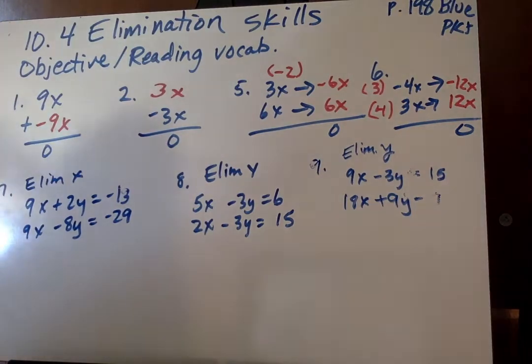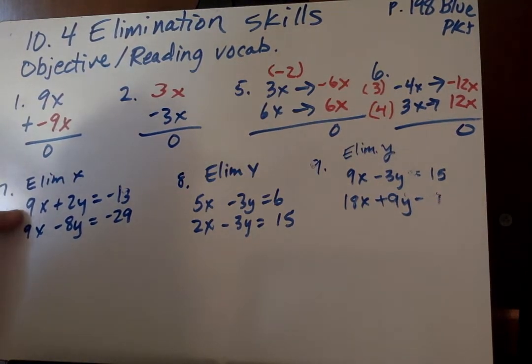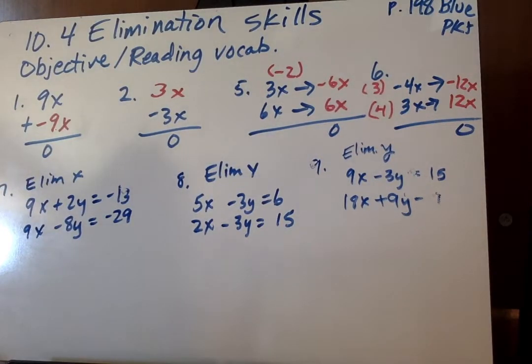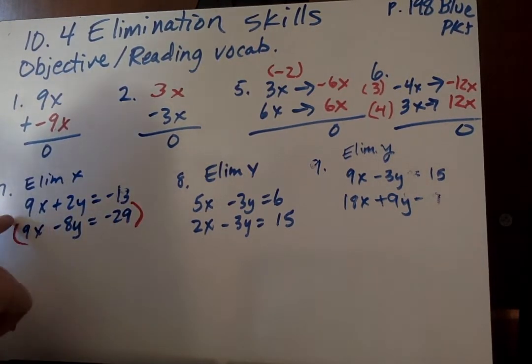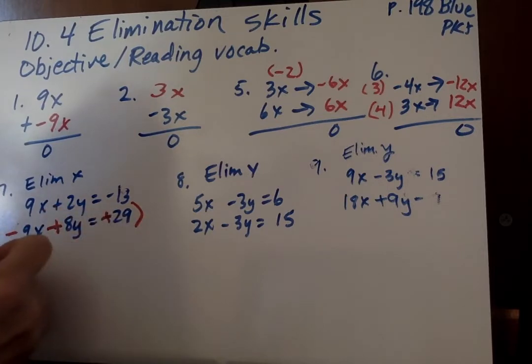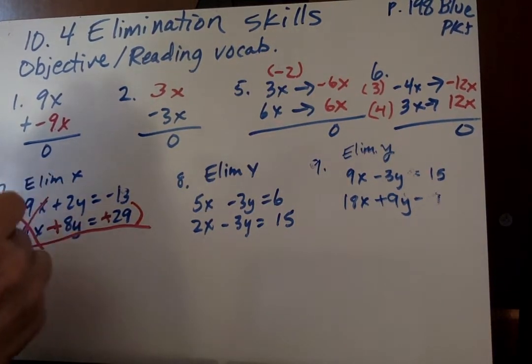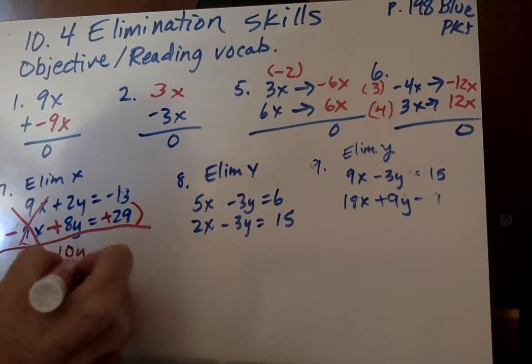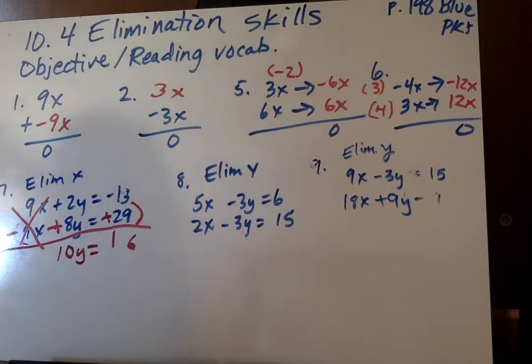We go on to number 7, and it says eliminate x. So if we're going to eliminate x, we need opposites. If we add these two together right now, 9 plus 9, we get 18, so we need to change one of them. I'm going to go ahead and change the second one, and I'm going to multiply all of these by negative 1. When I do that, this becomes negative 9x, this becomes plus 8y, and this becomes positive 29. Then when I add them together, I eliminate this 9x, and I'm left with 10y equals 16. So that's how we eliminate x.